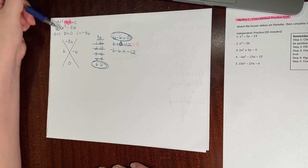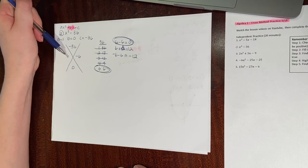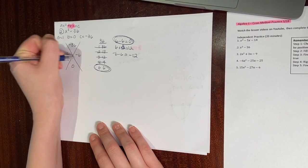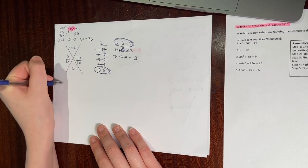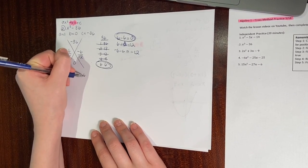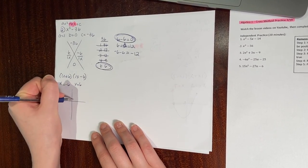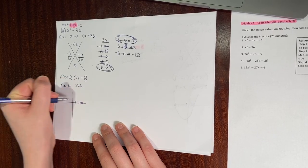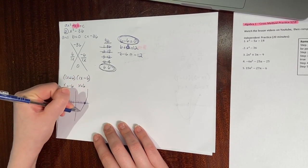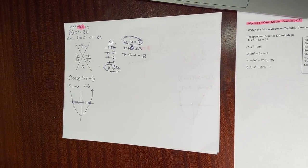I fill those in and double-check. Then I divide by 1x and get 1x plus 6 and 1x minus 6. My zeros are negative 6 and positive 6. On a graph, I count to 6 in each direction and mark my zeros there. That is factoring with no b value.